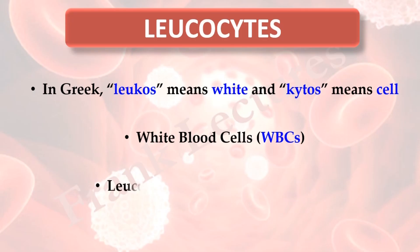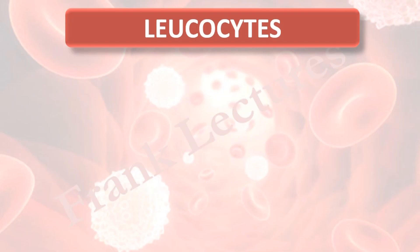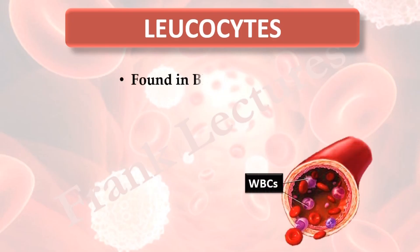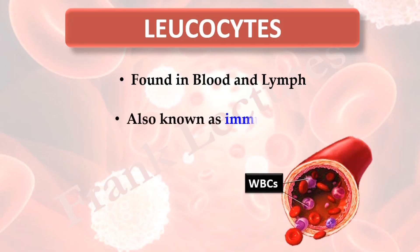Leukocytes arise from bone marrow. In the bone marrow, most of these cells develop as well as mature. Leukocytes are found in blood and lymph, thus they are dispersed throughout the body. Leukocytes are also known as immune cells.